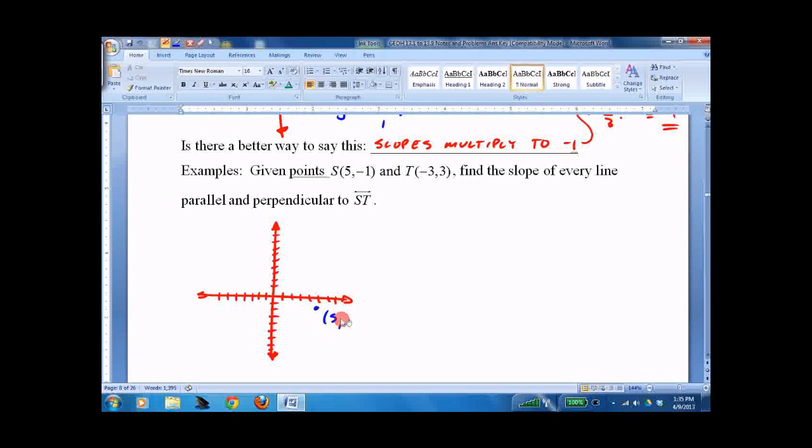Because that will help you avoid making mistakes. This is (5, -1). This is (-3, 3). So I better get a negative slope when I connect these. So x1, y1, x2, y2: 3 minus negative 1 over negative 3 minus 5 is 4 over negative 8 is negative 1/2.